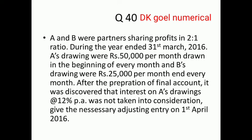After the preparation of final account, it was discovered that interest on A's drawings at the rate 12% per annum was not taken into consideration. So you have to watch out this statement. Interest on A's drawing means we find out only A's interest on drawing is not considered in account. After the preparation of P and L appropriation, we find out the A's interest on drawing is not taken into account. So there is a mistake.